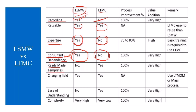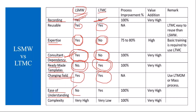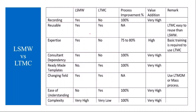Regarding ready-made templates — this is the main difference: in LSMW there are no ready-made templates, but in LTMC you have ready-made templates for all master data objects. You can also change the fields; this is available in both tools. Regarding ease of understanding: LSMW is very complicated and difficult, it takes a lot of time, whereas LTMC is very simple and easy to understand. The complexity is very high in LSMW, whereas in LTMC it is much lower. These are the differences between LSMW and LTMC.